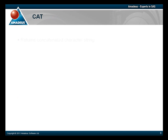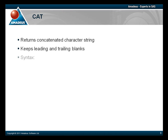Firstly, let's look at the CAT function. The CAT function is used when the user wants to concatenate more than one string together, whilst keeping the leading and trailing blanks in each string. The syntax of the CAT function is to list the variables or strings you wish to concatenate together, separated by commas, enclosed within the brackets of the function.